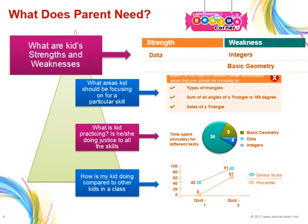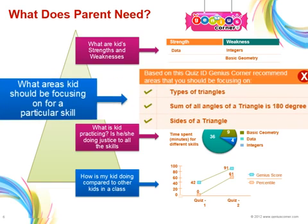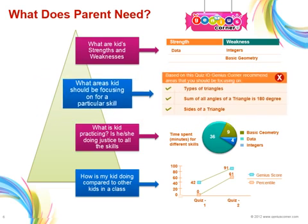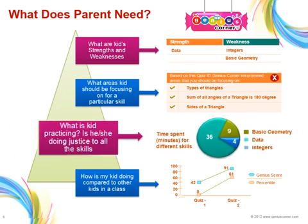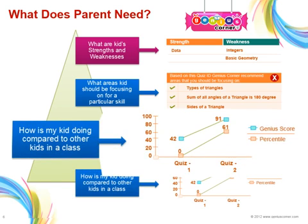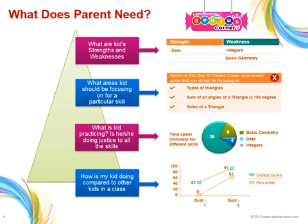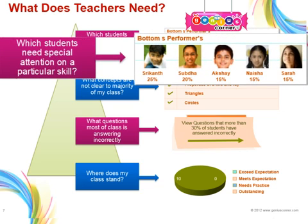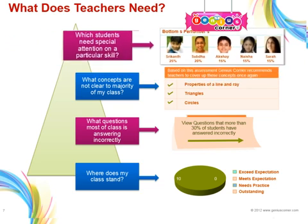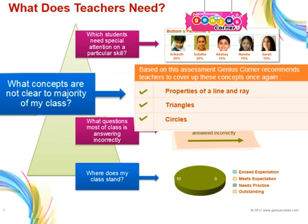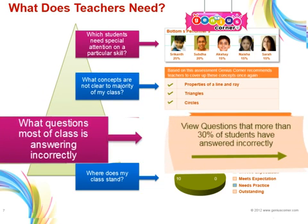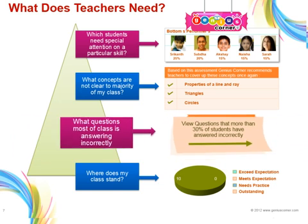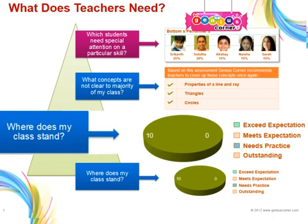Genius Corner gives you everything you need to analyze students' strengths and weaknesses: what areas kids should be focusing on, how they are spending their time, and how they are performing relative to other students in the class. Genius Corner also provides valuable information to teachers, such as whether certain students need additional attention on a particular skill, if there's a concept or subject that the majority of the class is not understanding, if there's a particular question that the majority of the class is answering incorrectly, and where their class stands compared to others.